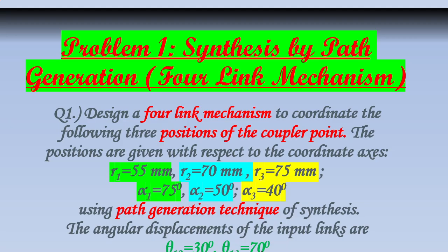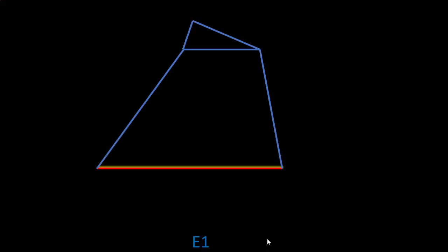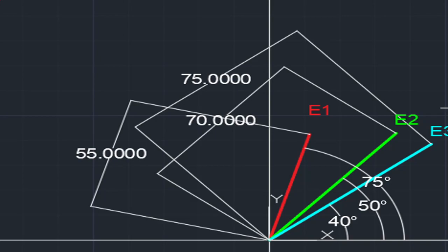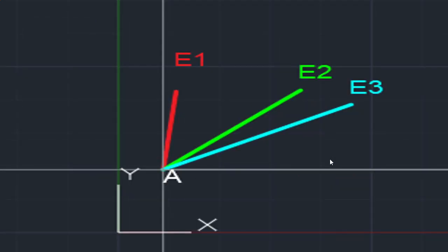Now let's draw this. This is the origin, this is the y-axis, and this is the x-axis. From the origin, the first point is at a distance of 55mm at an angle of 75 degrees — r1 = 55, alpha1 = 75. Similarly, we locate E2 and E3.